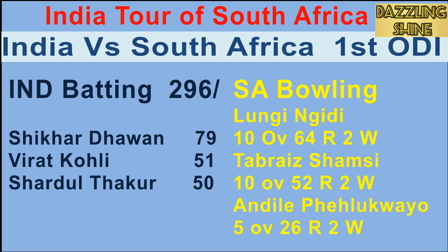Third ball of the 39th over, Pell Q to Ashwin — a low bouncer, Ashwin looks to play on top of it, takes the inside bottom edge straight onto the wicket, and Ashwin is gone for seven. India's batting line is really tumbling down today, despite having a fantastic start.